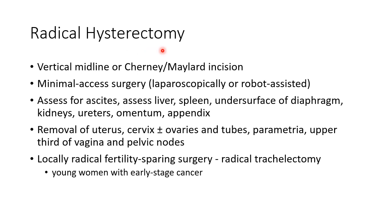Radical hysterectomy is the procedure of choice. It can be done by vertical midline, Pfannenstiel, or Maylard incision. Minimal access surgery can also be done by either laparoscopy or robot-assisted approach. We have to assess for ascites, liver, spleen, undersurface of diaphragm, kidneys, ureters, omentum, and appendix in order to assess the extension of the tumor.